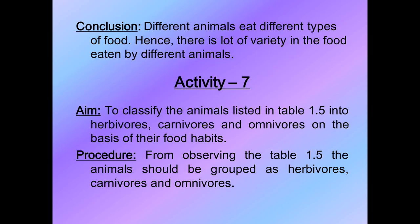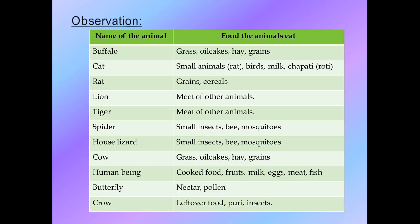Let's classify: Buffalo eats grass, oil cakes, hay, and grains - all plant products - so buffalo goes into the herbivores group. Cat eats small animals like rats and birds - animal products - as well as chapati and roti, which are plant-based. So cat eats both animal and plant products, meaning cat goes into the omnivores category. Rat eats grains and cereals, which are completely plant products, so rat is an herbivore.